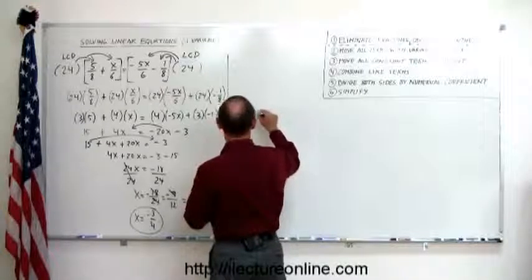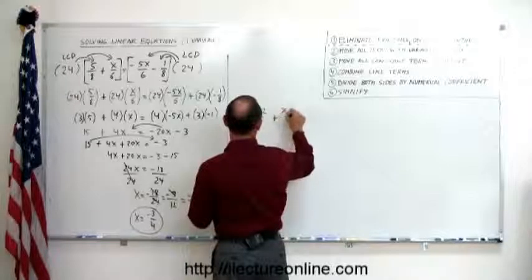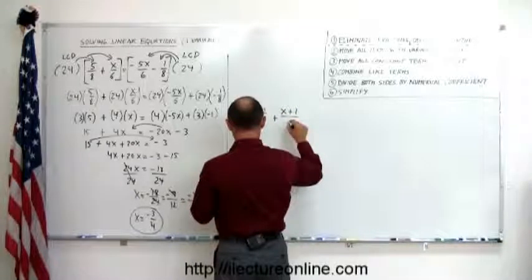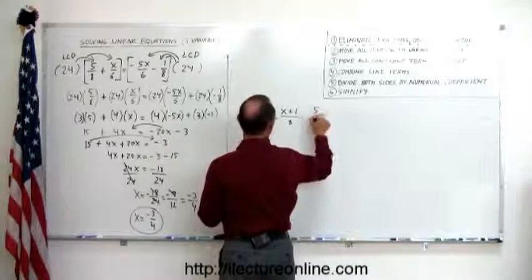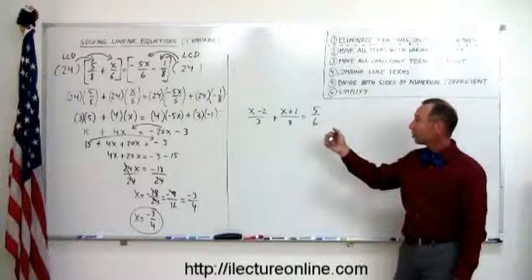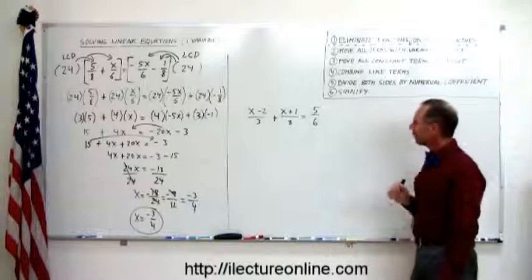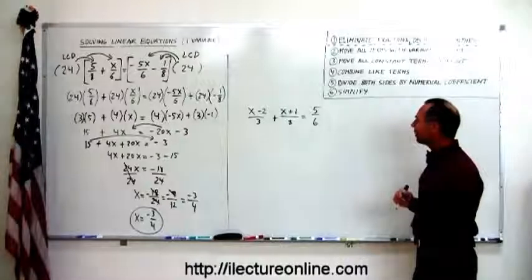We have x minus 2 over 3 plus x plus 1 over 8 equals 5 over 6. Again, we have a linear equation, but they have fractions, and we have to get rid of the fractions somehow.